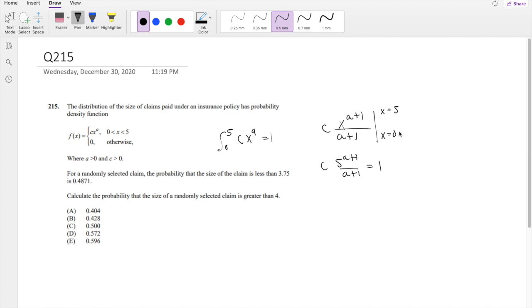Since if you plug in 0 for any number you just get 0, so this is the final thing. If I solve for c, you get that c is equal to (a+1) over 5^(a+1).